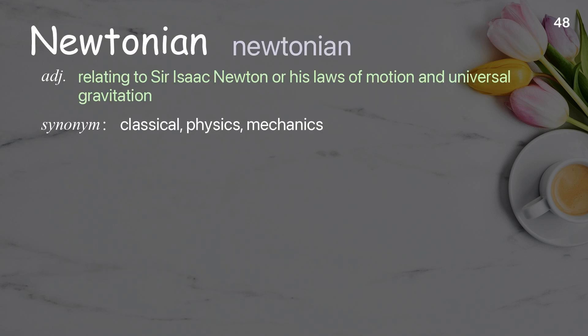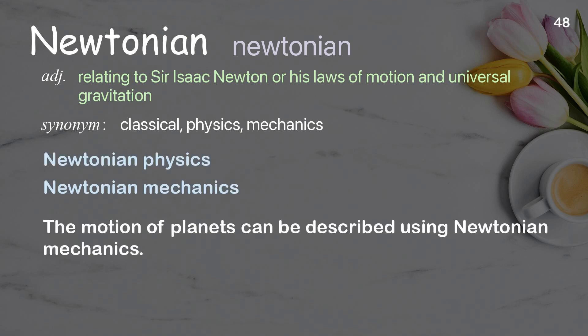Newtonian: Relating to Sir Isaac Newton or his laws of motion and universal gravitation. Examples: Newtonian physics. Newtonian mechanics. The motion of planets can be described using Newtonian mechanics.